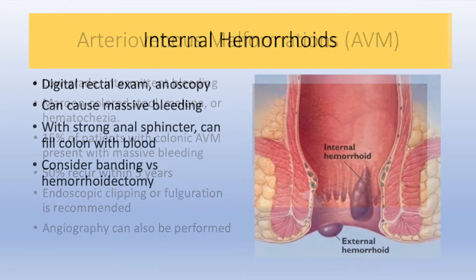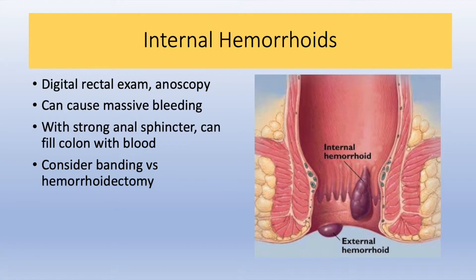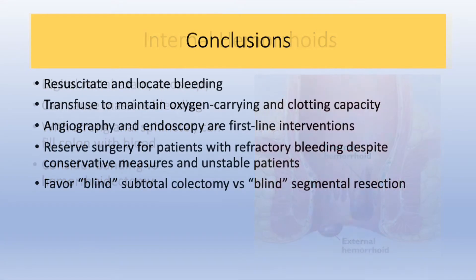Lastly, internal hemorrhoids can cause massive GI bleeding. To make the diagnosis, a good history paired with a digital rectal exam and anoscopy should be done. Massive bleeding coupled with a strong anal sphincter tone can result in bleeding up the entire colon into the cecum. Hemorrhoid banding or formal hemorrhoidectomy can be done.